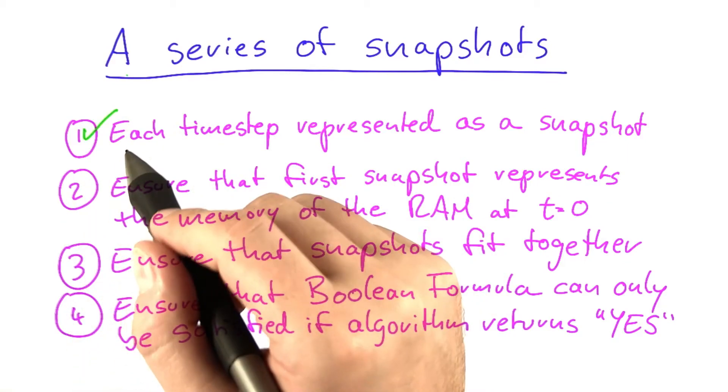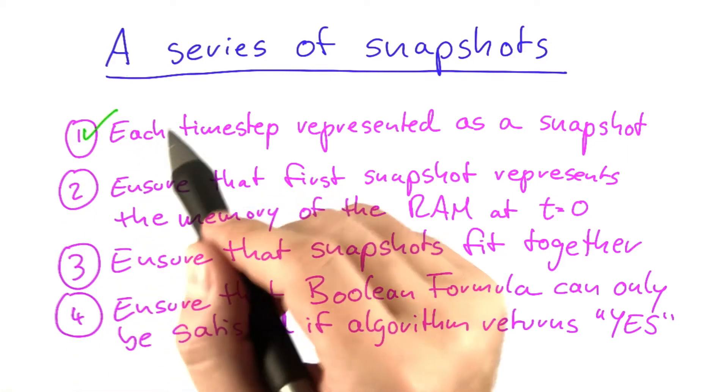We already know how to do the first part of this. We just have to write a Boolean formula for each single time step.